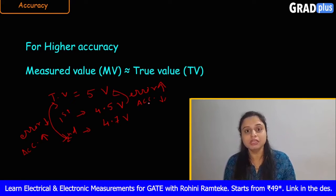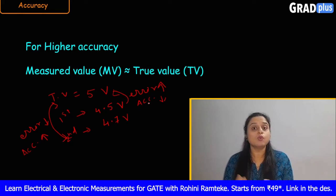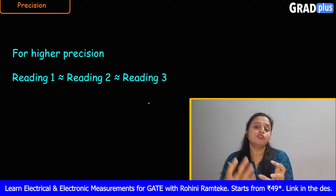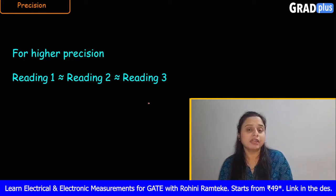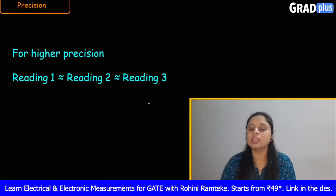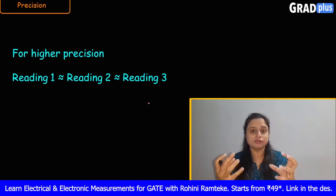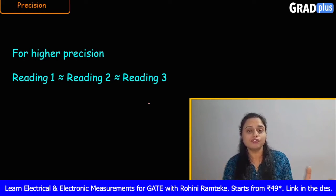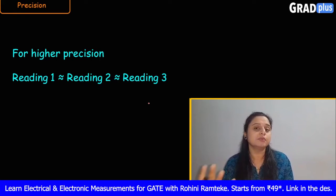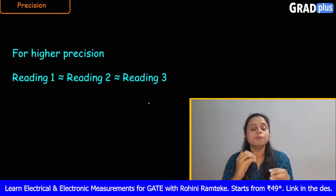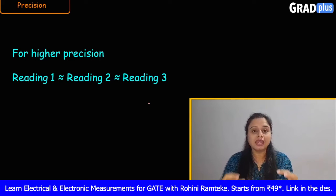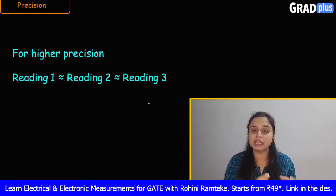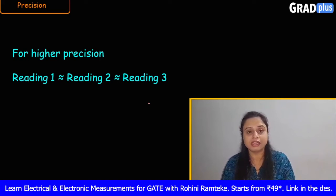Now let us see what precision means. For any meter, if we take a number of readings, those readings should be nearly equal to one another. If the readings vary widely, we do not say the meter is precise. For better precision, the readings of that meter should be approximately or nearly equal to one another.